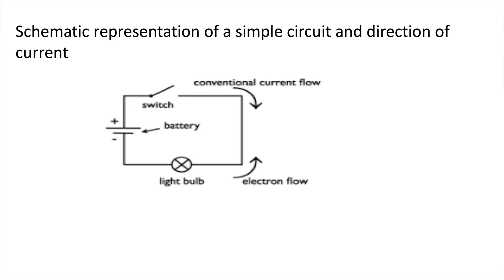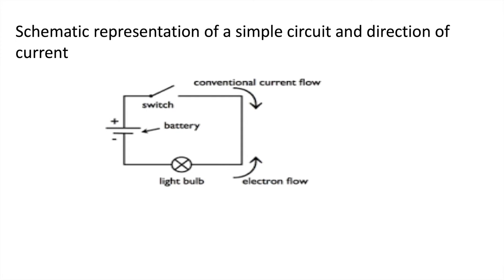In a simple circuit, the direction of current flows from the positive terminal to the negative terminal of the battery, while the direction of electron flow is from the negative terminal to the positive terminal. The direction of current is always opposite to the direction of flow of electrons — current flows positive to negative, electron flow is negative to positive.